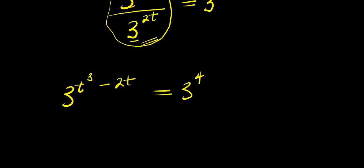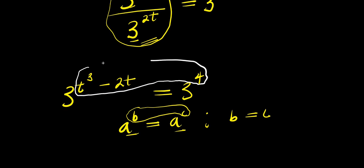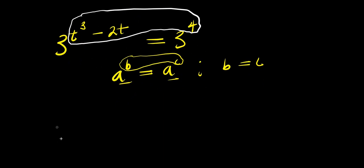So now, what we are going to do next will be to apply this other identity: if you have a to the power b equals a to the power c, that means b equals c, because the bases are the same — we compare the exponents. So from here, we are simply going to have t cubed minus 2t equals 4.